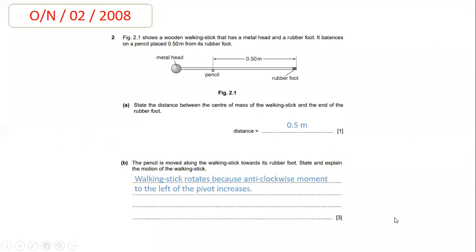The next question is from 2008, paper 2, October-November. Figure 2.1 shows a wooden walking stick with a metal head and a rubber foot. The pencil acts as a pivot, and the rubber foot is 0.50 metre away from the pivot. In part A, the examiner asks you to state the distance between the center of mass of the walking stick and the end of the rubber foot. The answer is clearly shown in the diagram: 0.50 metre.